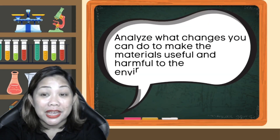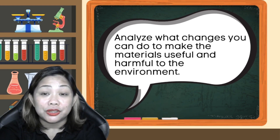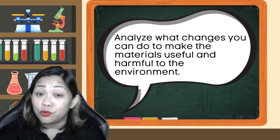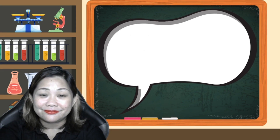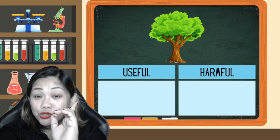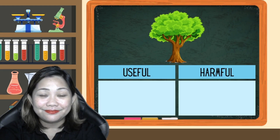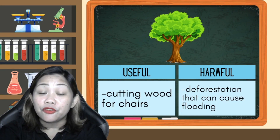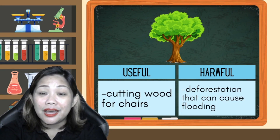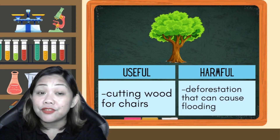Analyze what changes you can do to make the materials useful or harmful to the environment. For wood: cutting wood for chairs is useful, while deforestation that can cause flooding is harmful.